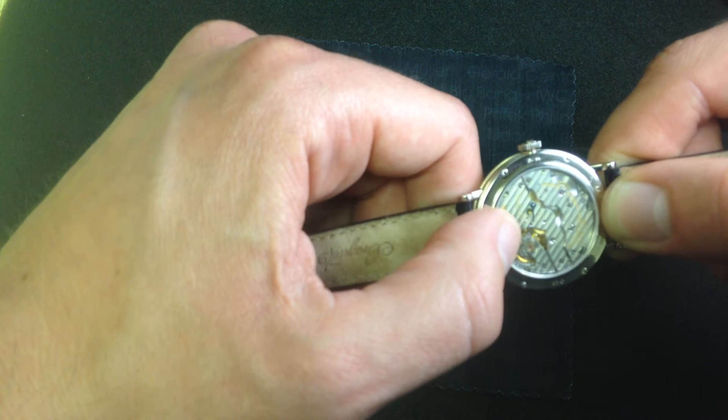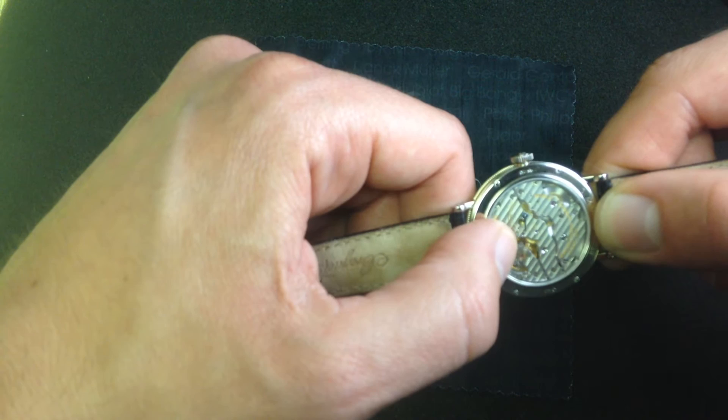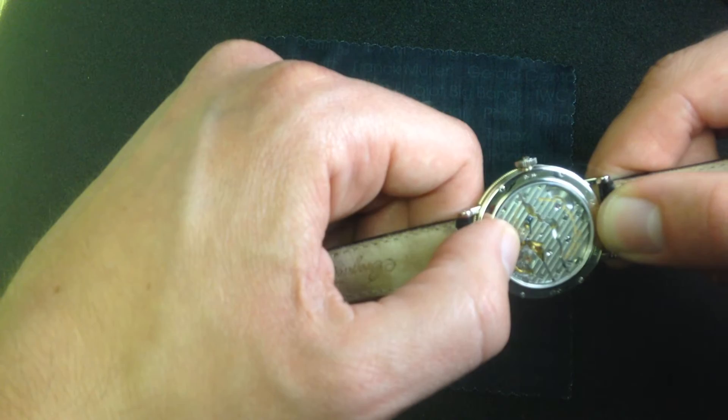Plus, it has a bigger balance wheel operating at a lower frequency for more shock resistance and longer autonomy. The old version of this watch only had a 72-hour power reserve. Reduced to 21,600 vibrations per hour, it's a 96-hour true 4-day power reserve.